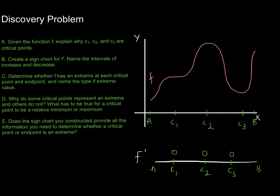To the left of critical point 1, we can see that the slope is positive — in other words, the function is increasing. In between the first and second critical points, the function is also increasing, so the derivative is positive. In between critical points 2 and 3, the slope is negative, meaning the function is decreasing, so the derivative is negative. And in between the last critical point and endpoint b, the function is increasing again, so the derivative is positive.